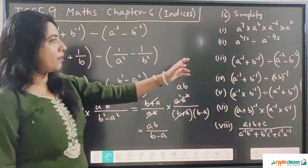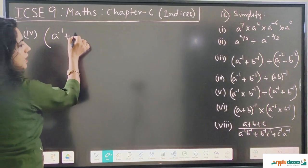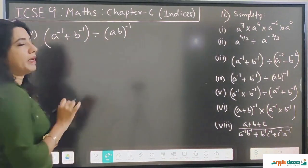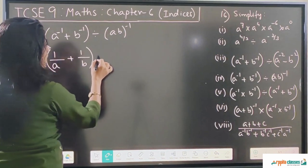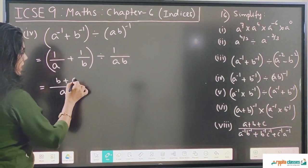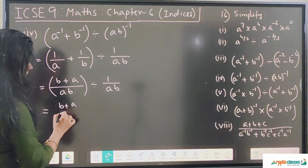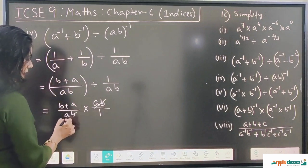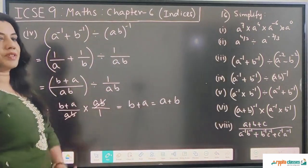So ab/(b - a) is the final answer for question number 3. Question number 4 is (a^(-1) + b^(-1)) ÷ (ab)^(-1). Making exponents positive: (1/a + 1/b) ÷ (1/ab). Taking LCM ab in the numerator gives (b + a)/ab. Applying division, we multiply by the reciprocal ab/1, and ab cancels. So the answer is a + b.